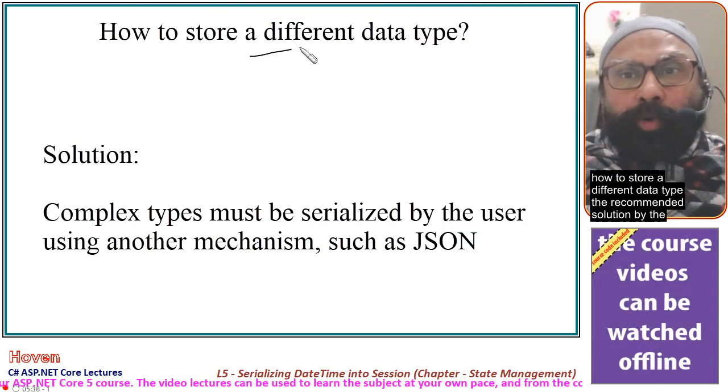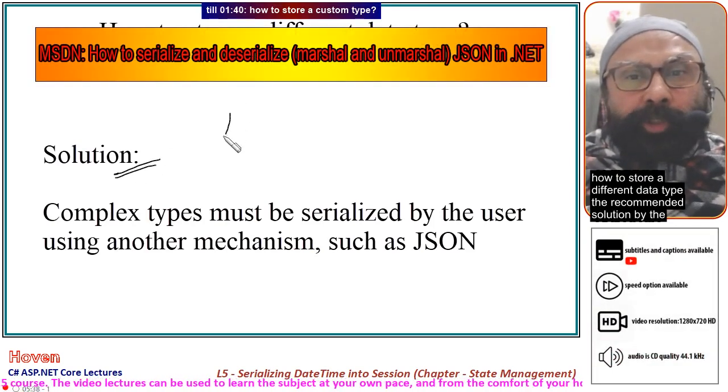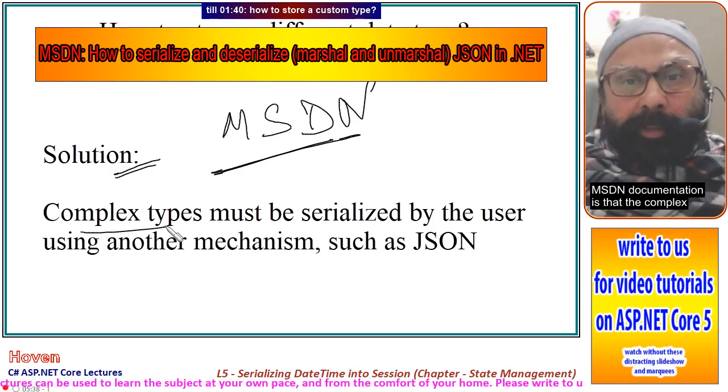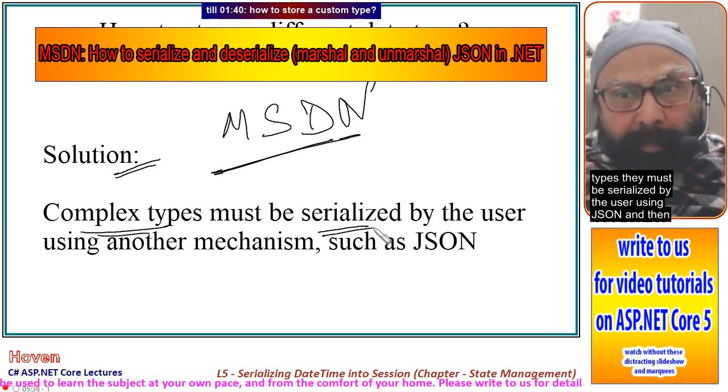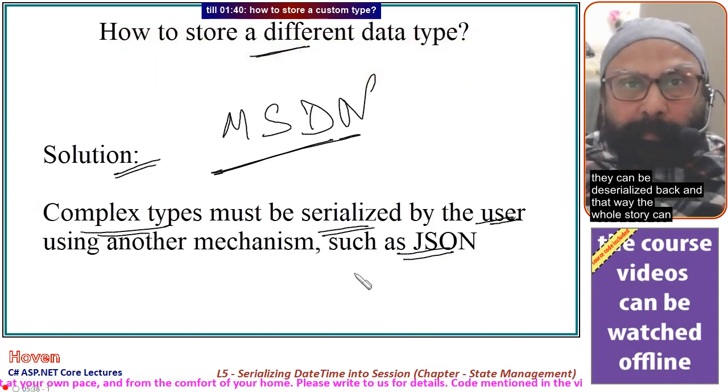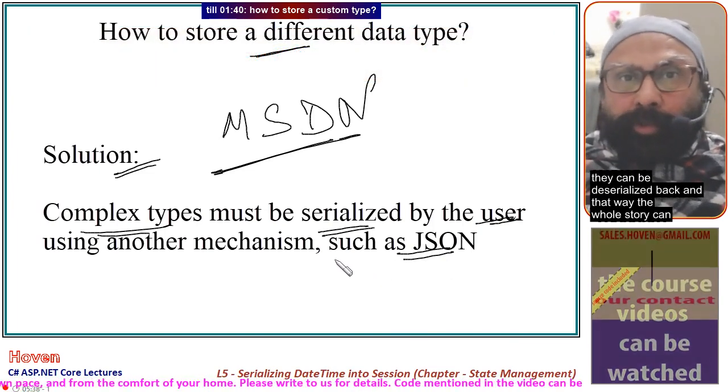How to store a different data type? The recommended solution by the MSDN documentation is that the complex types must be serialized by the user using JSON and then they can be deserialized back, and that way the whole story can be done.